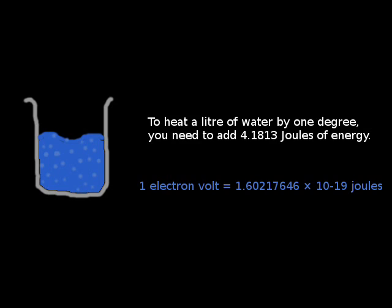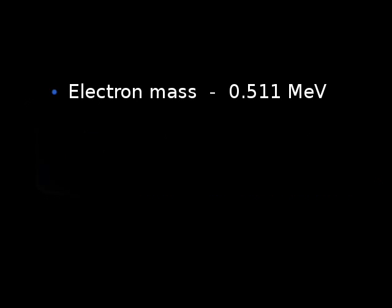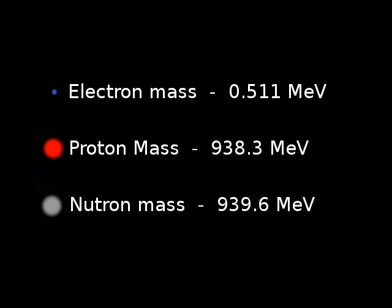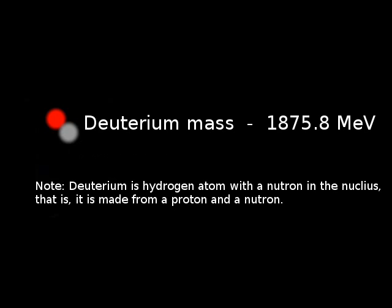So let's now look at the mass of some particles. The mass of an electron is 0.51 mega electron volts. The mass of a proton, 938.3 mega electron volts. A neutron has mass 939.6 mega electron volts. And the deuterium nucleus has a mass of 1875.8 mega electron volts.